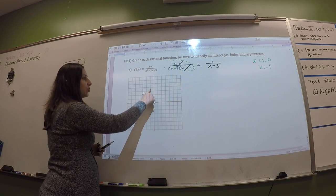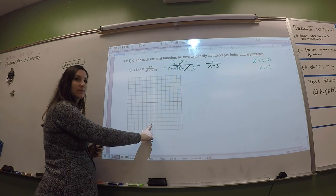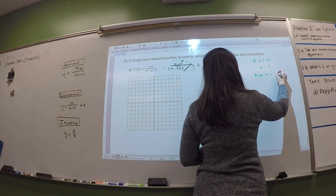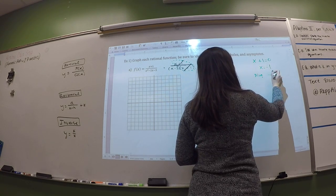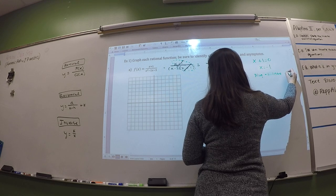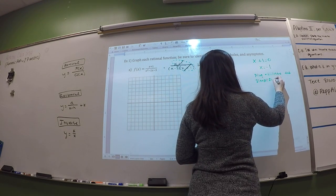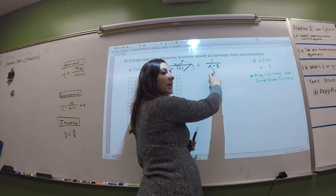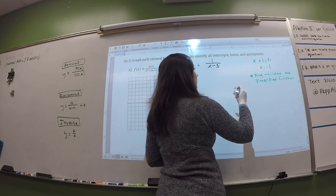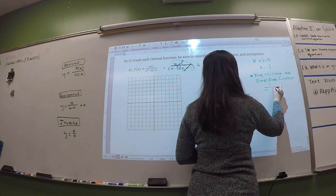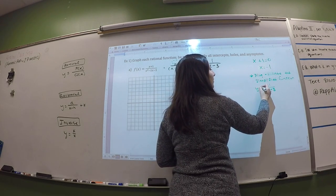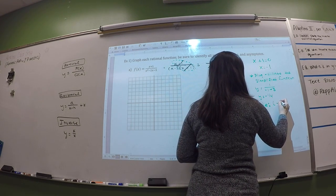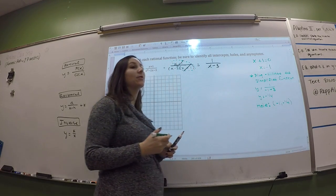So somewhere in this general area you're going to have a hole. To figure out exactly where it is, you're going to plug negative one into the simplified function — after we canceled the x plus one. So plug in negative one — what do you get? Negative one-fourth. So that means our hole is at negative one comma negative one-fourth. That's the exact location of the hole.